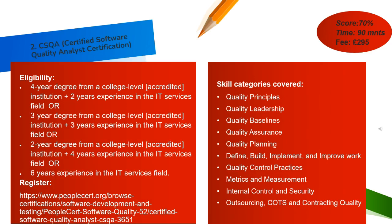The next certification is CSQA — Certified Software Quality Analyst. The job titles for this certification include: Senior Software Quality Analyst, Senior Software Quality Inspector, Software Quality Auditor, Software Quality Assurance Manager, and Software Quality Coordinator. You can get this certification to match those job profiles.